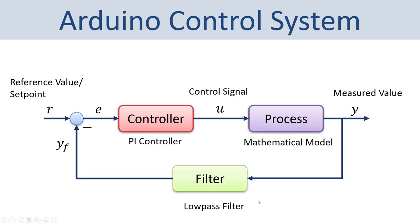Here you see the basic Arduino control system we are going to create. We will create a PI controller to control a process or a mathematical model in this case. We will create a basic low pass filter that removes noise from the process. We have the reference value, the filtered measurement value, and then we find the error between the reference value and the measured value. Based on the PI controller algorithm, it calculates a proper control signal sent to the process.